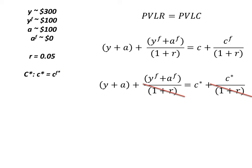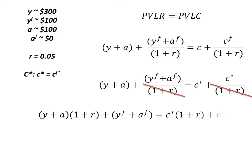What we're going to do is multiply everything by (1+r) to get rid of our denominators. So we're going to get Y plus A times (1+r) plus YF plus AF has to equal C* times (1+r) plus C*.